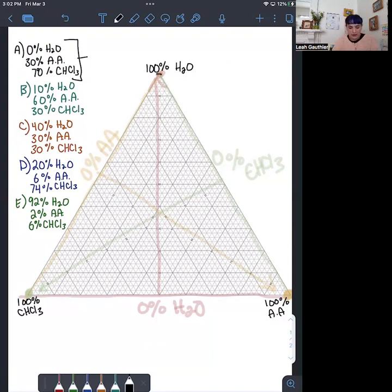For a point with 0% water, that is going to fall somewhere along the 0% water line. So it's going to be the furthest away it could be from the 100% water point.